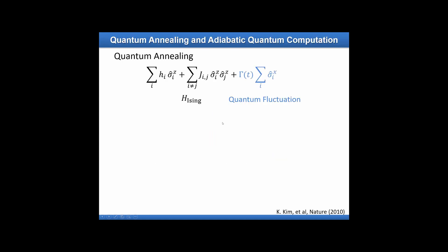So the main idea of quantum annealing — the D-Wave approach — is: you have a Hamiltonian whose ground state you want to find, you start from some configuration, allow local changes, slowly reduce those changes, and eventually end up in the ground state.